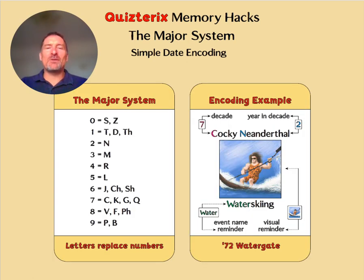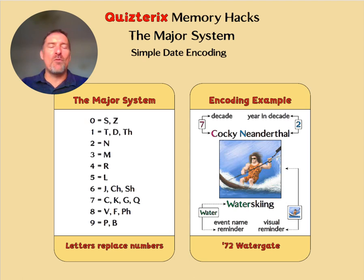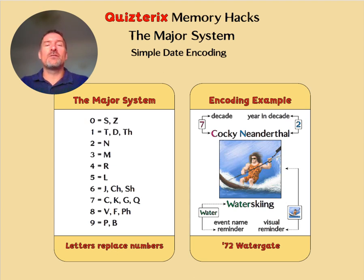The code relates certain numbers to letters. We use those letters at the start of words, then create a crazy image so we can remember our code phrase. In this example, we're encoding the date of the Watergate scandal that happened in 1972. Using the major system, the seven is a C and the two is an N. We make a phrase with a word beginning with C, a word beginning with N, and something that sounds like 'Watergate' and is more memorable. We get 'cocky Neanderthal water skiing.' To remember this event and date, you just need to remember: cocky Neanderthal water skiing.